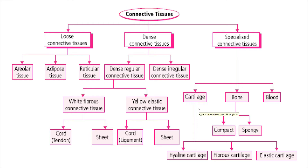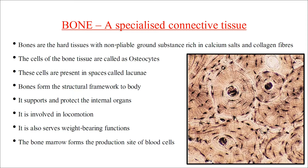Bone is a specialized connective tissue with a non-pliable ground substance — it cannot bend and is not flexible. Bones are rich in calcium salts and collagen fibers. Cells of bone tissue are called osteocytes, and the spaces between them are called lacunae. Bones form the structural framework of the body, support and protect internal organs, are involved in locomotion, serve a weight-bearing function, and bone marrow is a site for the production of blood cells.